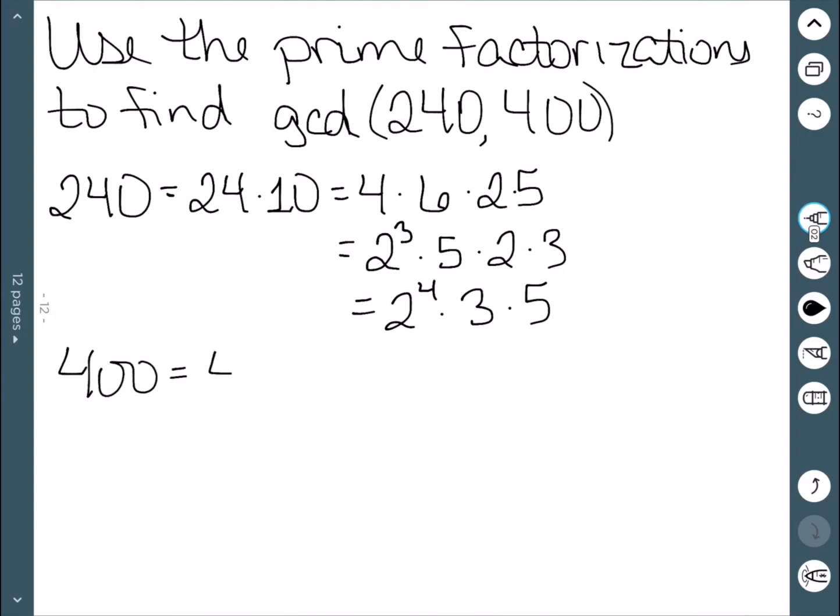400 is 4 times 100. We know that 4 is 2 squared. We also already found the prime factorization of 100, so we get 2 to the fourth times 5 squared.